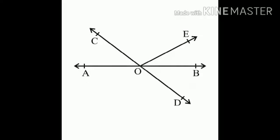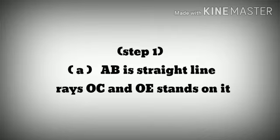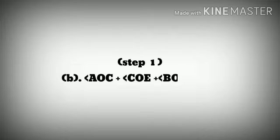Step 1: AB is a straight line and rays OC and OE stand on it. Therefore, angle AOC plus angle COE plus angle BOE is equal to 180 degrees. So, angle AOC plus angle BOE plus angle COE equals 180 degrees.